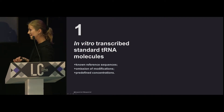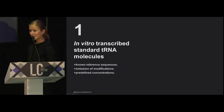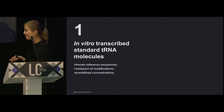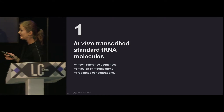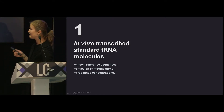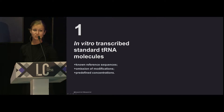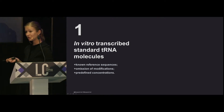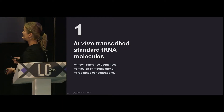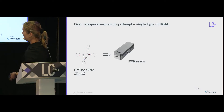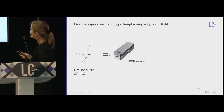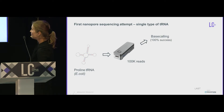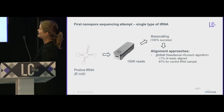We started with in vitro transcribed tRNAs because we know the sequence, they don't have any modifications — which we've heard can cause miscalling and other problems during sequencing — and we can define the concentration of the input. We started with just one tRNA, used our MinION, and base-called them. It was successful using the normal Guppy from the nanopore team.